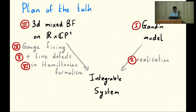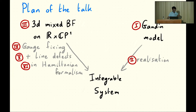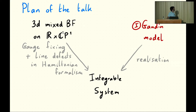The plan of the talk is as follows: I'll start by reminding you what the Gaudin model is, focusing on the case of a finite dimensional Lie algebra. Then I'll give an example of a realization to produce a concrete integrable system out of it. You should think of the Gaudin model as a universal integrable model based on the Lie algebra; by realizing the Lie algebra in a certain way, you get specific integrable models. Then I'll explain how to get the same model from 3D mixed BF theory.